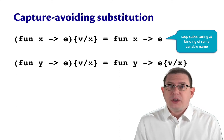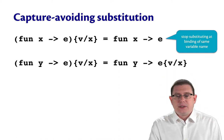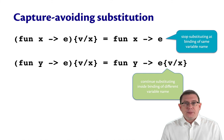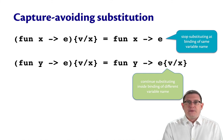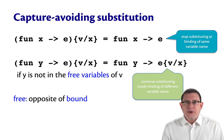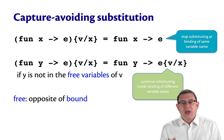But when we try to substitute inside of an anonymous function that binds a different variable name, we will go ahead and recurse, but only in certain cases. We'll continue substituting inside a binding of a different variable name if, and this is kind of like a precondition here, if y is not in the free variables of v.